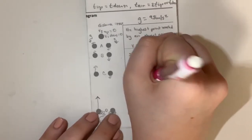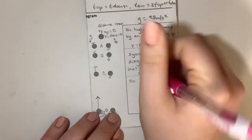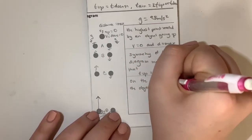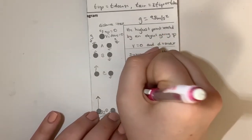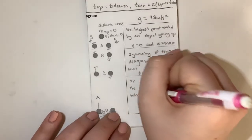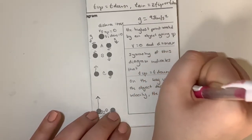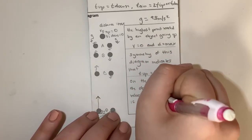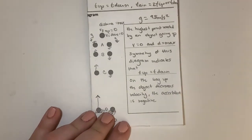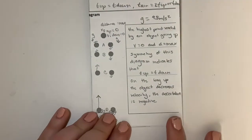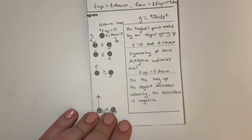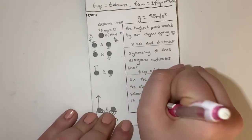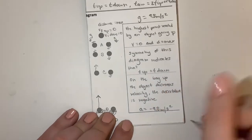On the way up, the object decreases velocity, so the acceleration is negative. As mentioned in the previous video, vertical acceleration is 9.8 meters per second squared, but in upward vertical motion the acceleration is going to equal negative 9.8 meters per second squared.